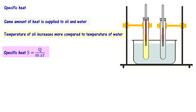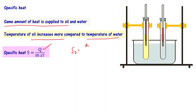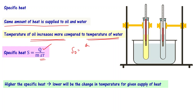Now when it comes to the oil and water experiment, we have seen the temperature of oil increases more compared to the temperature of water, because the heat supplied is the same. Q is the same for both oil and water, and M is also the same. Then delta T is going to be different. So temperature of oil increases more compared to temperature of water. Higher the specific heat, lower will be the change in temperature for a given supply of heat.